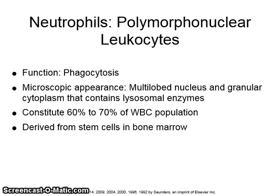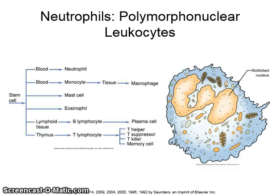A neutrophil, pictured in figure 2-10, functions in phagocytosis. Its microscopic appearance includes a multi-lobed nucleus and granular cytoplasm that contains lysosomal enzymes for digesting phagocytized particles. Neutrophils constitute 60–70% of the white blood cell population and are derived from stem cells in the bone marrow. See figures 2-10 and 2-11 for more information.